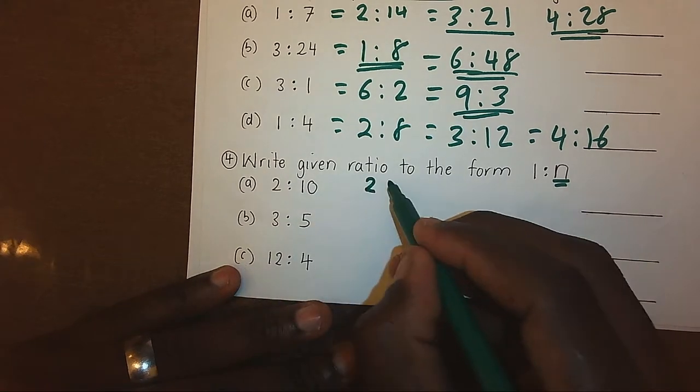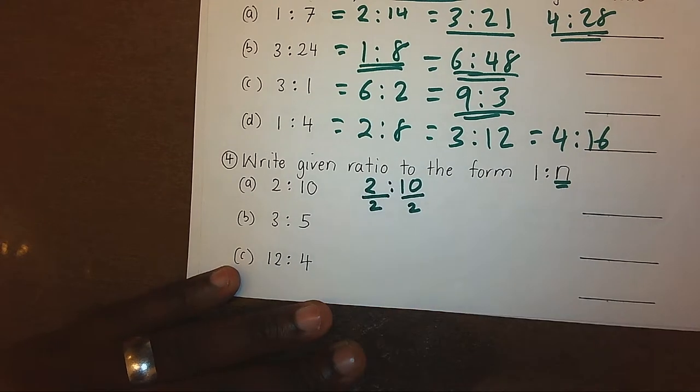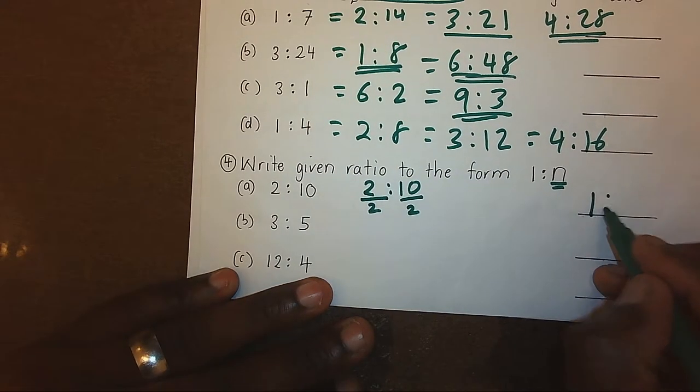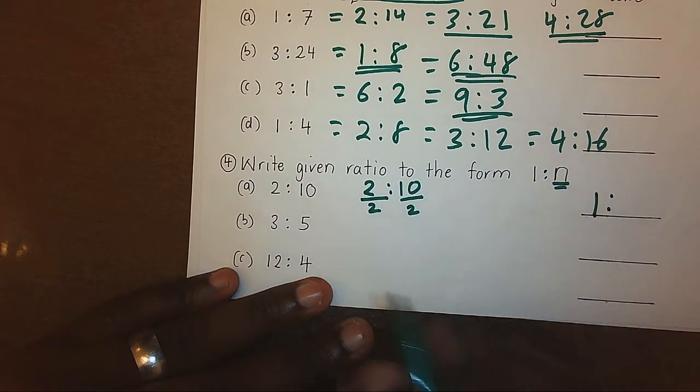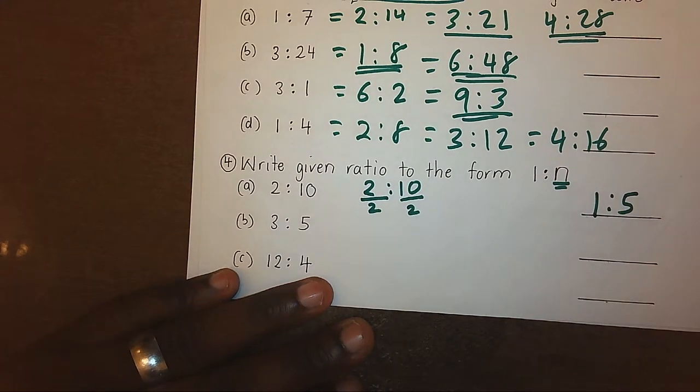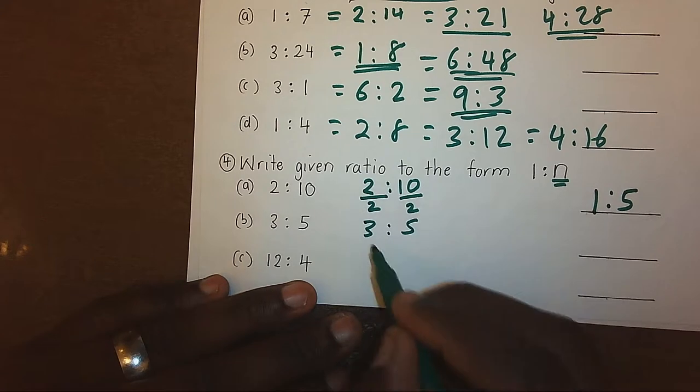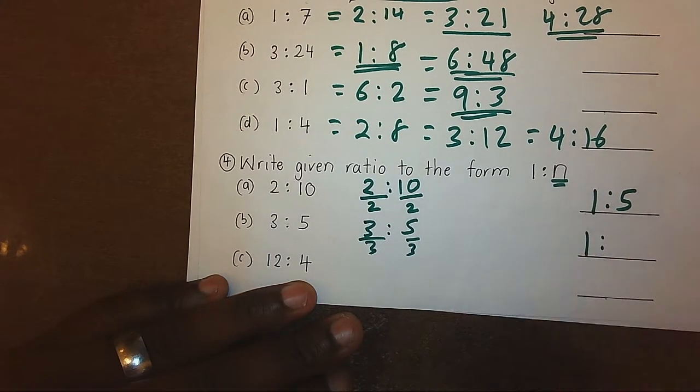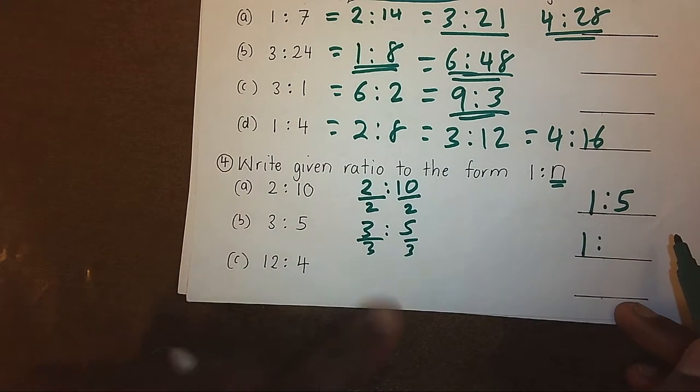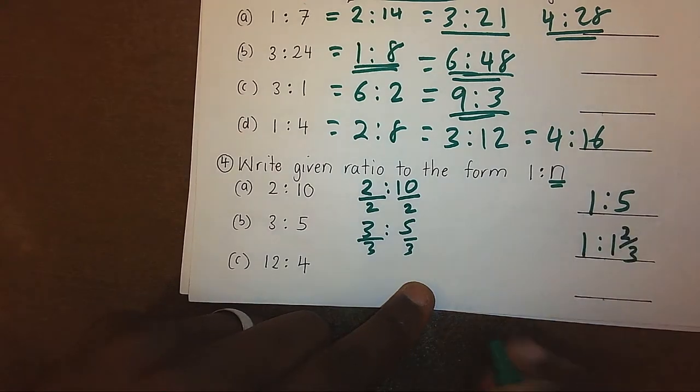For 2 ratio 10, divide by 2, we shall get 1. The other side will be 10 divided by 2, giving us 5. The second example, divide by 3. This side we shall have 1, the other side will remain a fraction, that is 5 over 3, which we could write as 1 and 2 over 3.